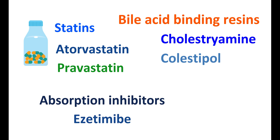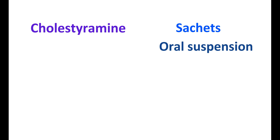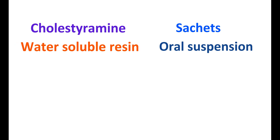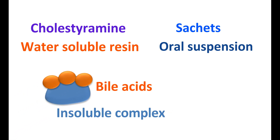Today in this video we are going to discuss cholestyramine, covering how the drug acts, its effect on gastric absorption, important side effects, management, and dosage. Cholestyramine is available in the form of sachets as a powder suitable for oral suspension. In powder form it forms a water-soluble resin, but whenever it interacts with bile acids it forms an insoluble complex.